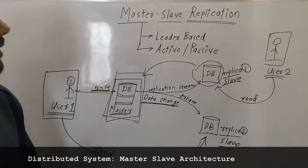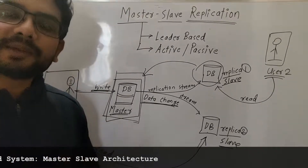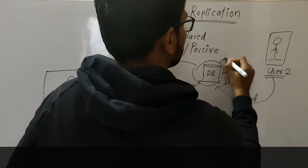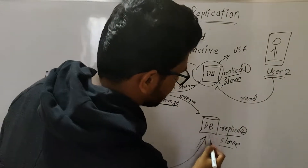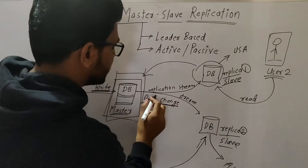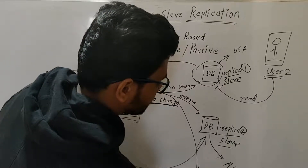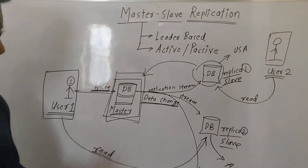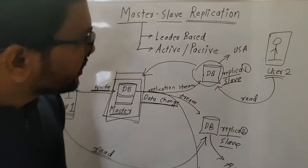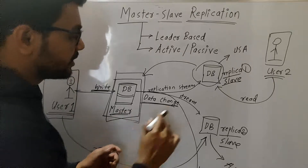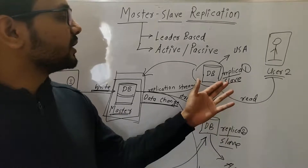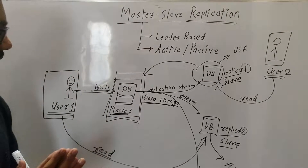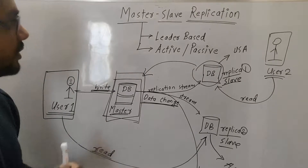So we have improved the availability of our system and also increased the scalability, as our replicas can be present at different geographical locations. For example, one replica in the USA, one in Australia, one in India. A user in the US will not need to get data from the Indian database server — they will get data from the replica residing in the USA. So network latency is drastically improved here. I hope this is pretty much clear now — we have improved so many things with the use of master-slave replication.